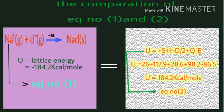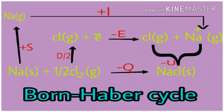When comparing equation number 1 and 2, the lattice energy is the same in each equation. See, this is Born-Haber cycle for NaCl.